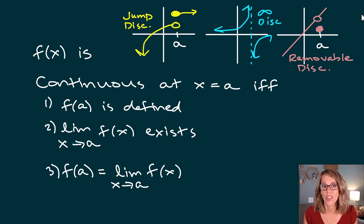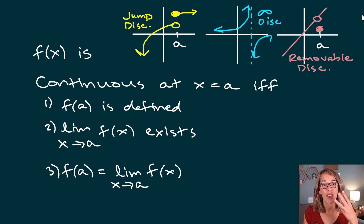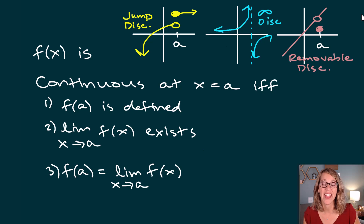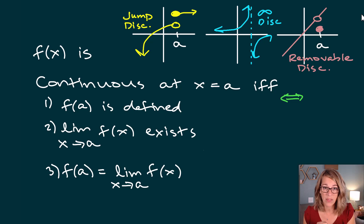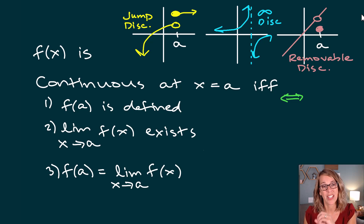We're going to go through some examples of functions verifying continuity using this definition. There are three things that you need to satisfy for f of x to be continuous at a value a. The IFF means 'if and only if' — it's a double implication. It means that if it's continuous, you get all three of those things for free, and if you've got all three things verified, you know it's continuous.